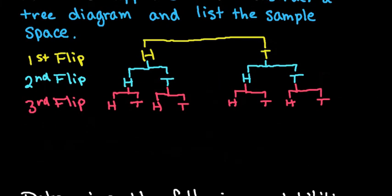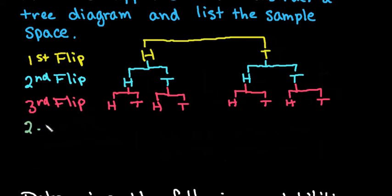If we use the fundamental counting principle to back up and see what our sample space is — it says that no matter how many times you do something you can multiply them together to find the total sample space. So I had two outcomes for the first one, times two, times two.